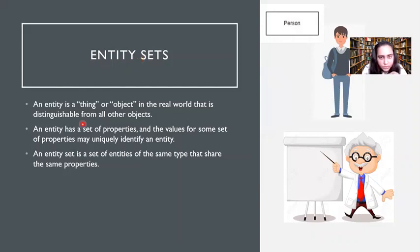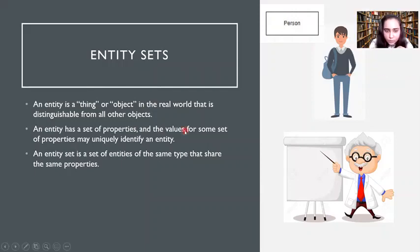An entity is a thing or an object in the real world that is distinguishable from all other objects. It has some properties, and these properties allow you to identify an entity uniquely. A set of entities of the same type, which share the same properties, creates an entity set.